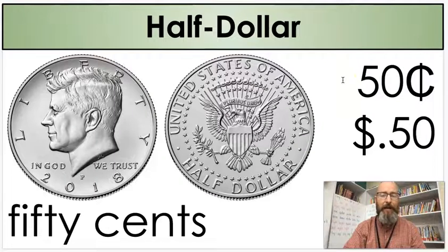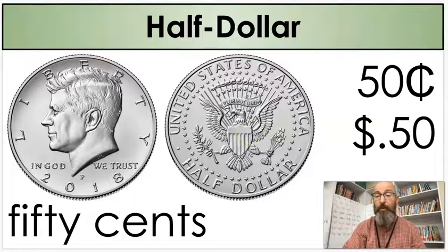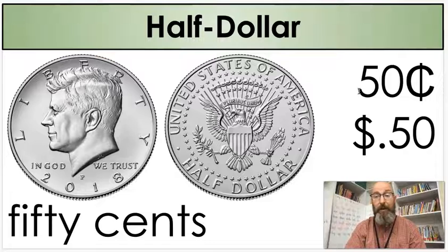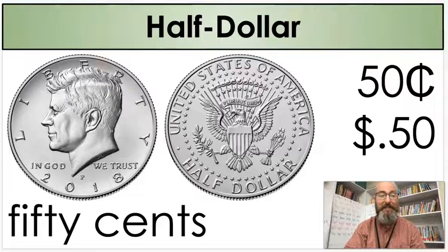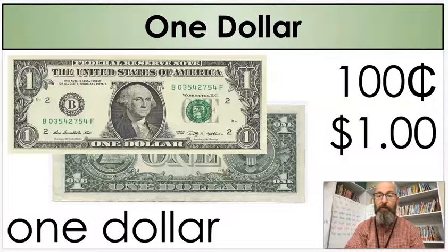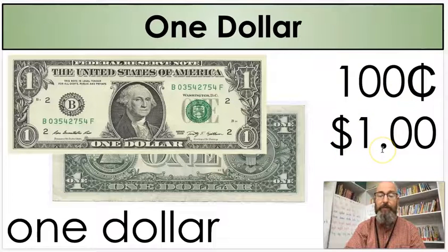And we have a half dollar. Half dollars you really don't see that often, but they are out there. If you get a half dollar, it's bigger than a quarter, and on the back it even says half dollar. A half dollar is worth fifty cents, and they call it a half dollar because it's worth half a dollar. A dollar is a hundred cents, and half of a hundred is fifty. The only bill we're going to go over today is our one dollar bill, which is worth one hundred cents, written with our dollar sign, a one, and a decimal.